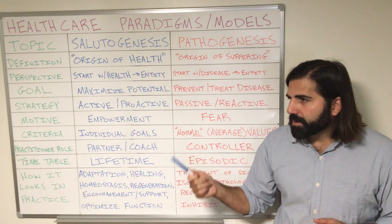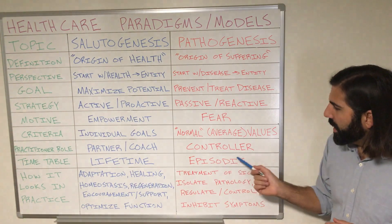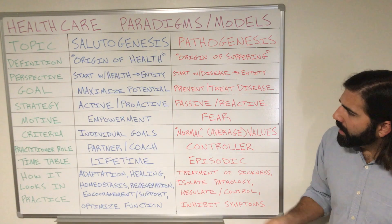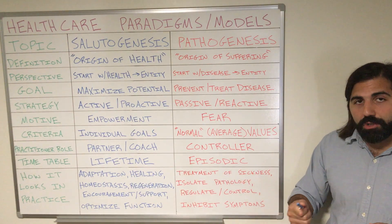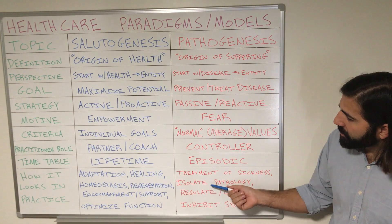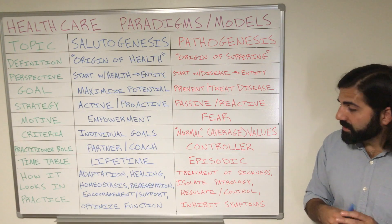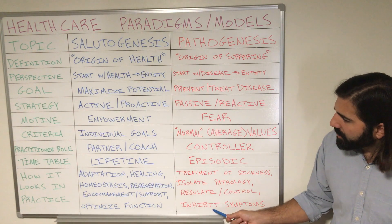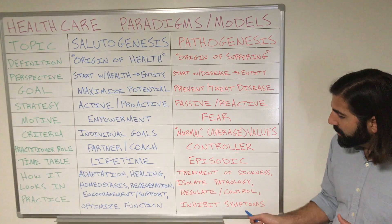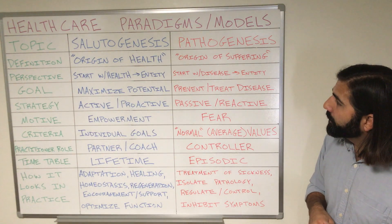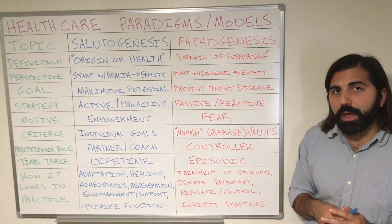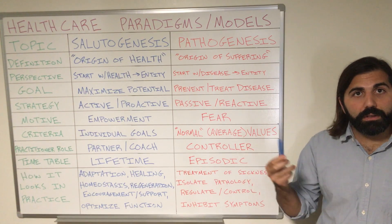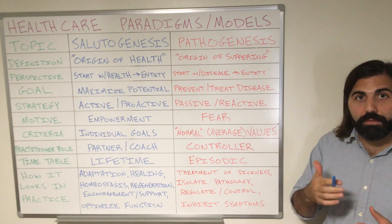The timetable of the pathogenic model is often used very episodically or intermittently — only when a disease presents itself. In practice, it's all about the treatment of sickness or disease, isolating pathologies and conditions, regulating and/or controlling symptoms, and trying to inhibit or suppress those symptoms of said sickness or disease. The major user of the pathogenic model is medicine, also known as allopathy — 'pathy' meaning disease and 'allo' meaning other, so it's essentially the study of other diseases.